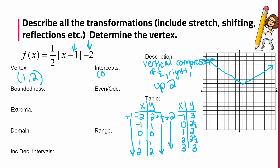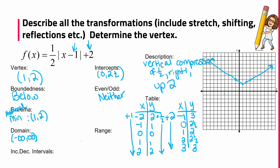The y-intercept is at (0, 2.5). My boundedness — it's bounded below. This is a neither for symmetry — not even nor odd. For extrema, this graph has an absolute and local minimum at (1, 2). Domain is negative infinity to positive infinity. Range starts at 2 and goes to positive infinity. Increasing interval is from 1 to positive infinity, and decreasing from negative infinity to 1. Remember, we use x values for that information.